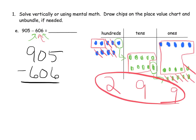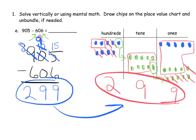Let's verify with the vertical method. Five ones minus six ones — can't do that, so we go to the hundreds column. We unbundle one hundred, making it eight hundreds, to get ten tens. Unbundle one ten, leaving nine tens, and giving us fifteen ones. Fifteen minus six is nine. Nine tens minus zero tens is nine tens. Eight hundreds minus six hundreds is two hundreds. Answer: 299.